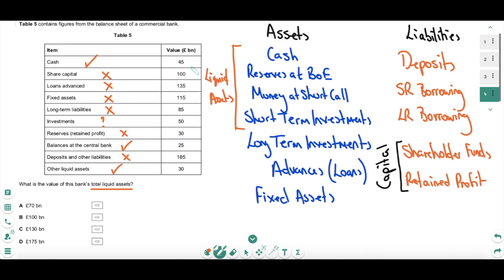We have three definites. Adding them up: 45 plus 25 is 70, plus 30 is 100 billion pounds — and that is one of the answers. If we add on investments we get 150, which is not one of the answers. So clearly investments here are not to be included as liquid assets. The answer therefore is B: 100 billion pounds.